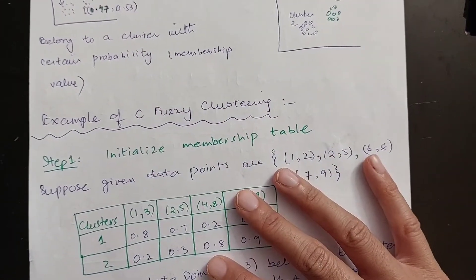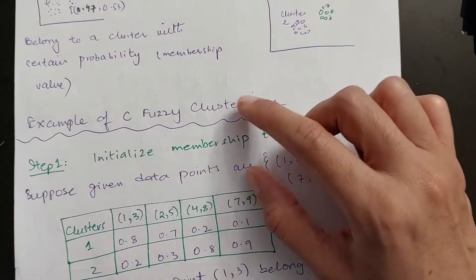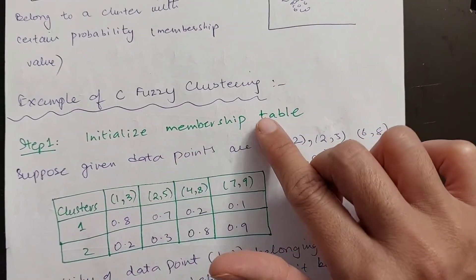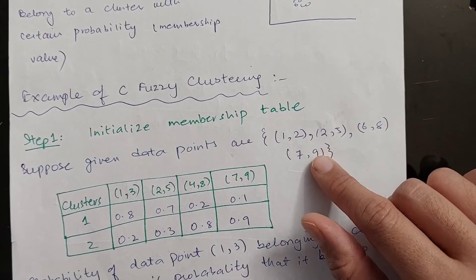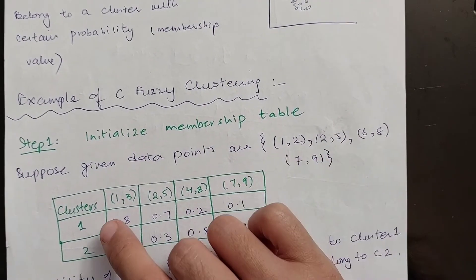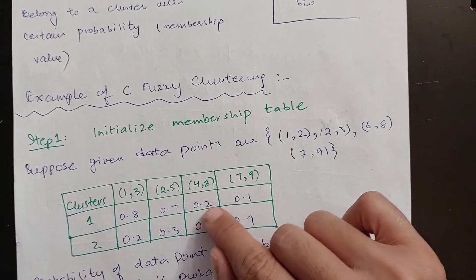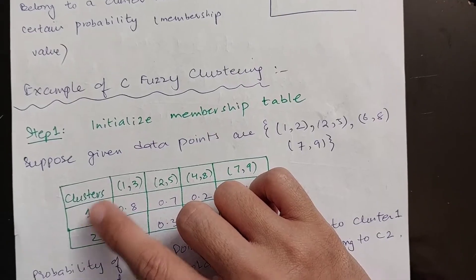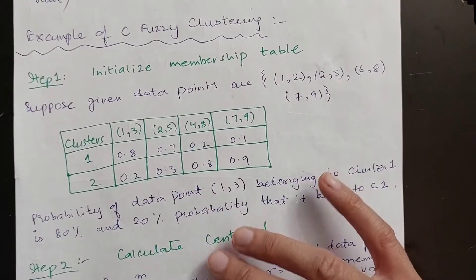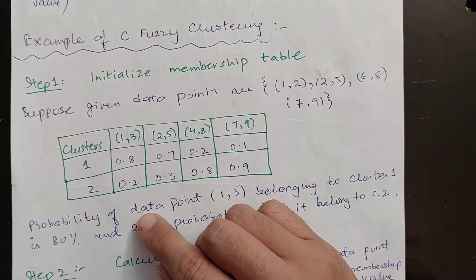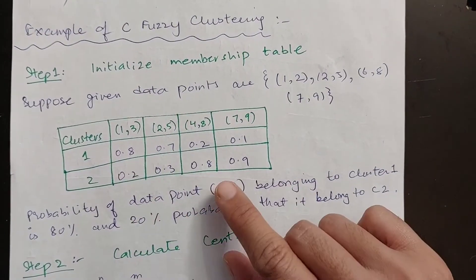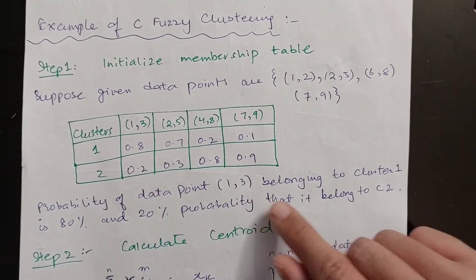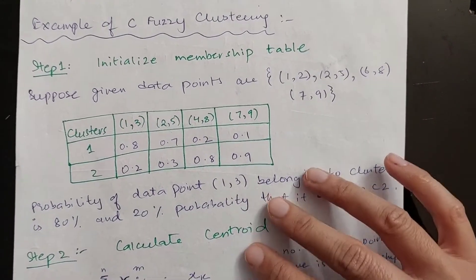Let's solve an example to understand how fuzzy c-means clustering actually works. In the first step, you have to initialize the membership table. Given these data points, you write down the probability for all data points that they belong to cluster 1 or cluster 2. For example, the probability of data point (1,3) belonging to cluster 1 is 80%, and 20% is the probability it belongs to cluster 2.